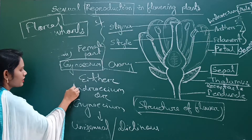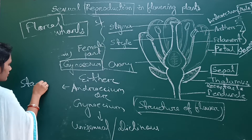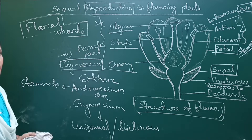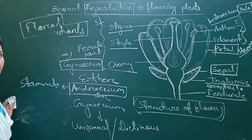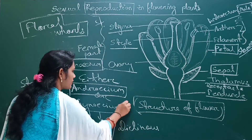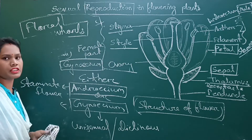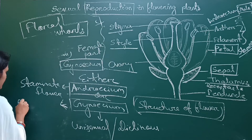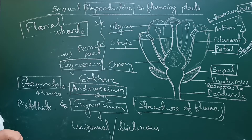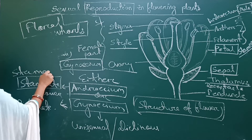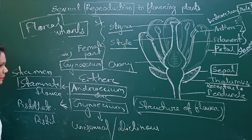In unisexual flowers, there are two types. If the flower contains only androecium — the male part — without the gynoecium part, then it is called a staminate flower. If the flower consists of only gynoecium — without androecium — then it is called a pistillate flower. These names come from the individual members: stamen for androecium and pistil for gynoecium.